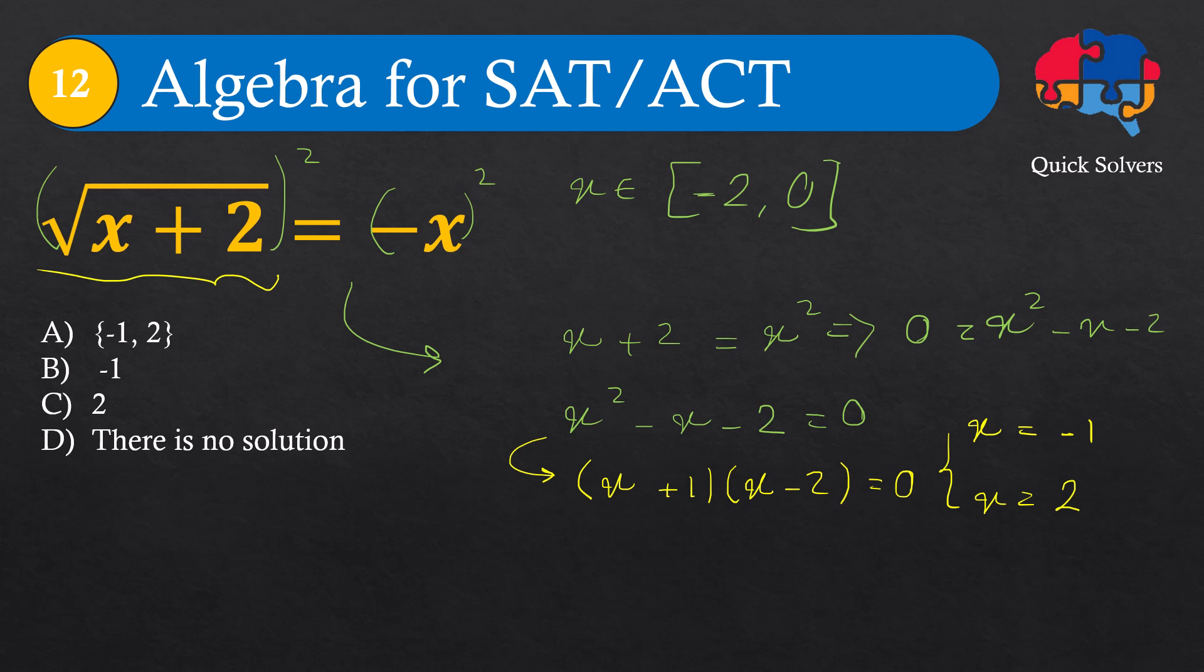Another way is to use the quadratic formula. Generally when you have ax squared plus bx plus c equals 0, then x equals minus b plus or minus the square root of b squared minus 4ac, all divided by 2a.